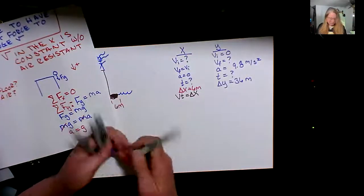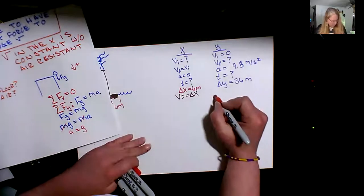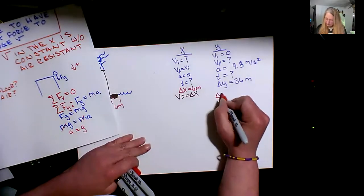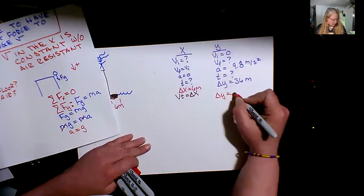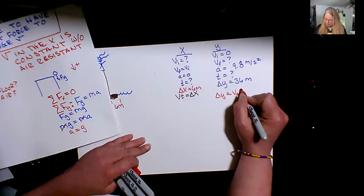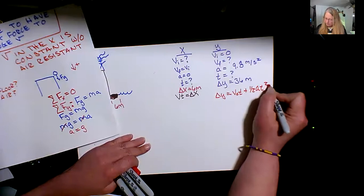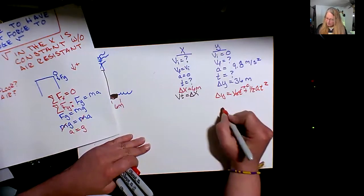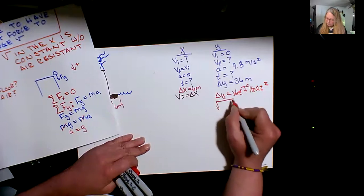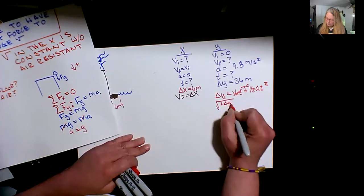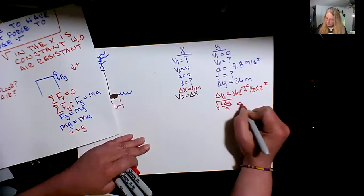So I can do this. I can say, okay, so v final, I'm sorry, delta y equals v naught t plus one half a t squared. We know that piece is zero, so then this becomes that the square root of 2 delta y divided by acceleration will give me my time.